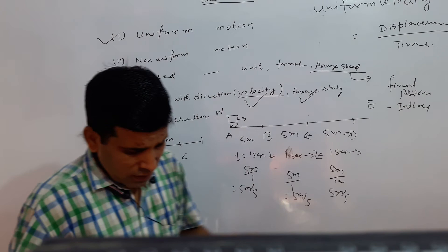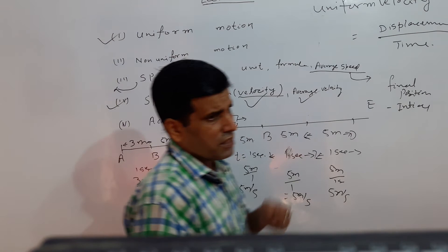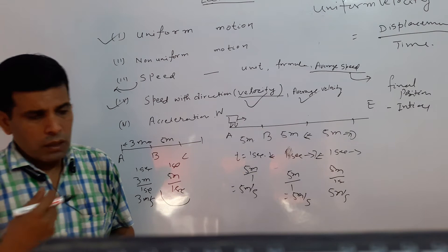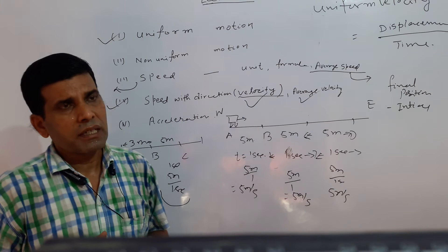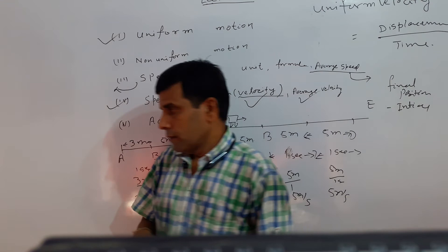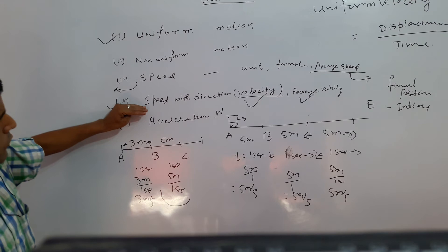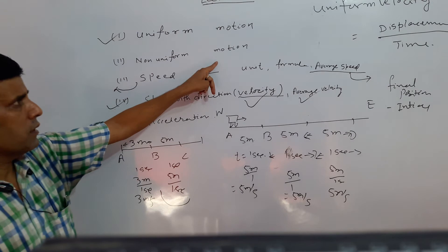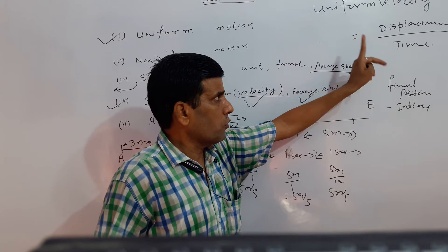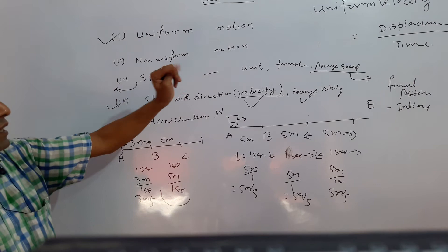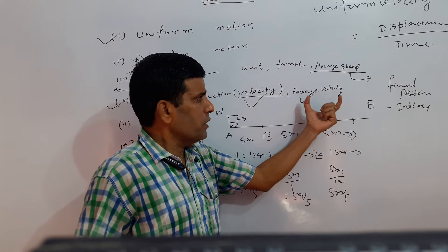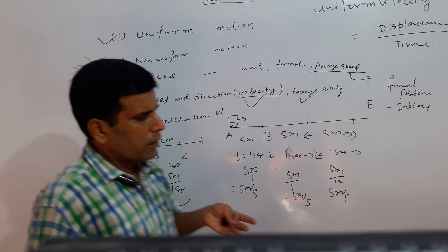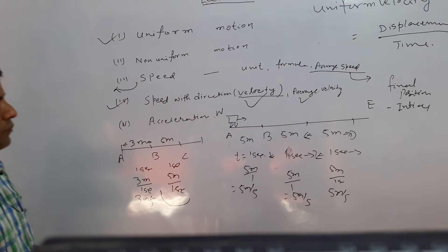Next, we define instant velocity. Instant velocity means: at that particular instant, what is the value of your velocity — the displacement covered at that exact moment divided by the time. That value is called instant velocity. So velocity has three concepts: uniform velocity, non-uniform velocity, and instant velocity.